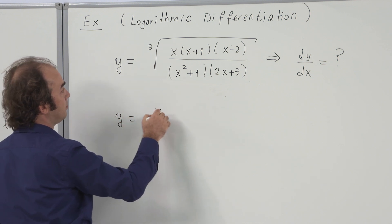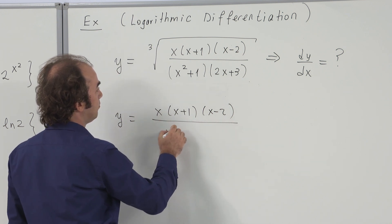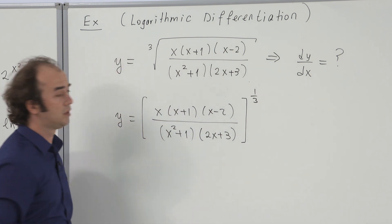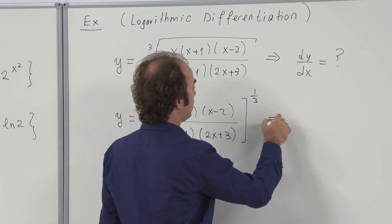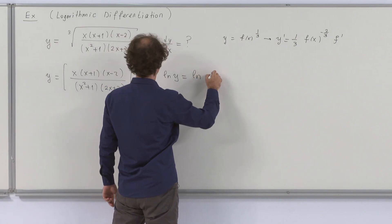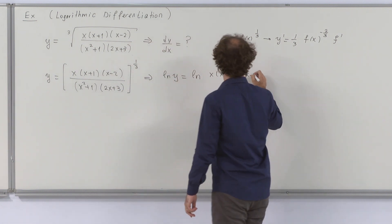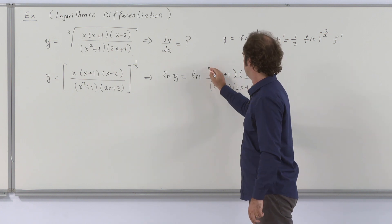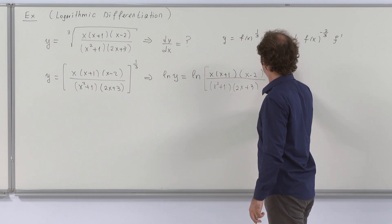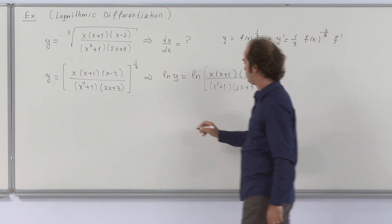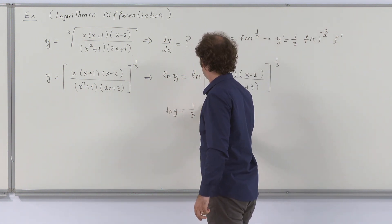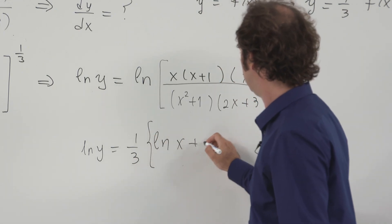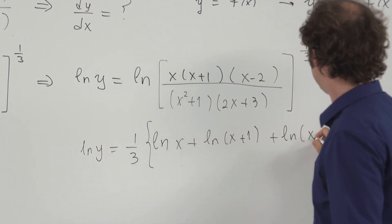Let us write the function in the form x(x+1)(x-2), rewriting the argument and putting it in power form. At this step, I evaluate the logarithm of both sides: ln(y) equals the expression with x, x+1, and x−2. I can take the power 1/3 to the front, and then simplify using the well-known properties of the logarithm function.